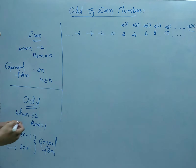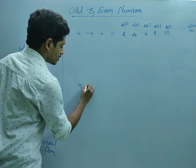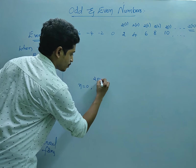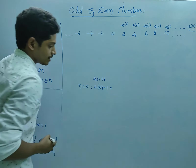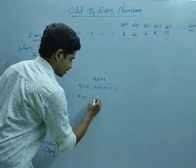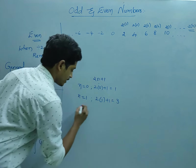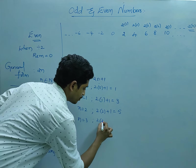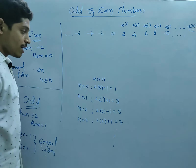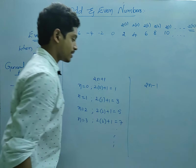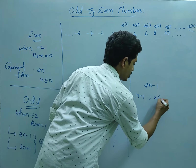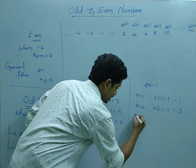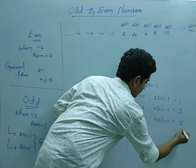I will be explaining both forms with examples. For 2n plus 1: when n=0, we get 2×0+1=1; when n=1, we get 2×1+1=3; when n=2, we get 2×2+1=5; when n=3, we get 2×3+1=7, and so on. For 2n minus 1: when n=1, we get 2×1−1=1; when n=2, we get 2×2−1=3; when n=3, we get 2×3−1=5, and so on.